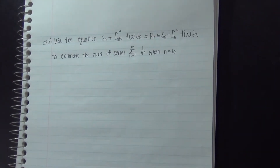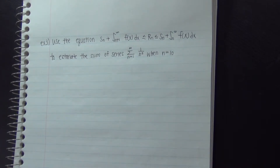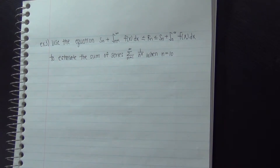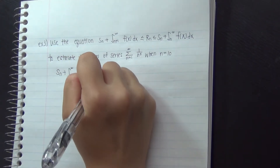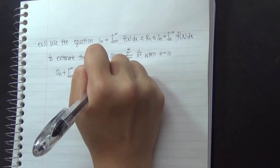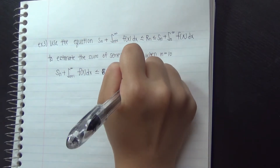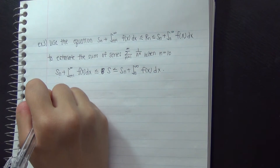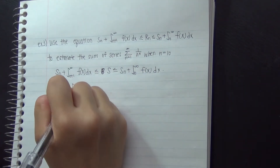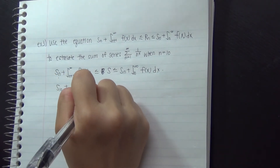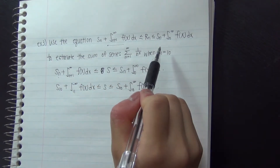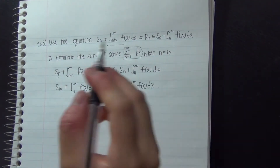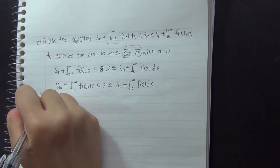For the next example, we'll use the equation we just derived to estimate the sum of the series 1/n^5 from n = 1 to infinity, when n = 10. Since n is 10, we plug in 10 and n+1 = 11 into the bounding equation. Since 1/n^5 is the same series from example 1, we already know that S10 = 1.03691.